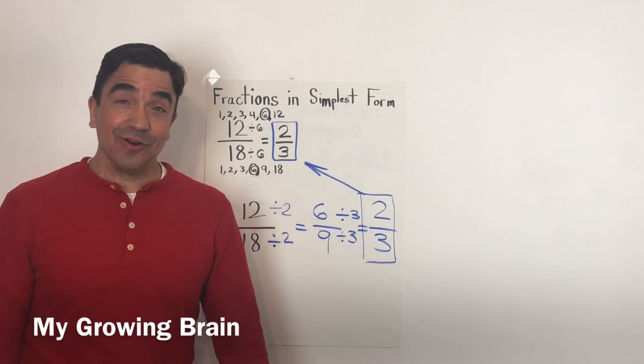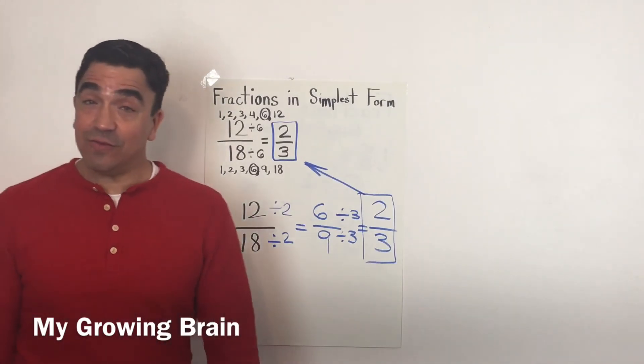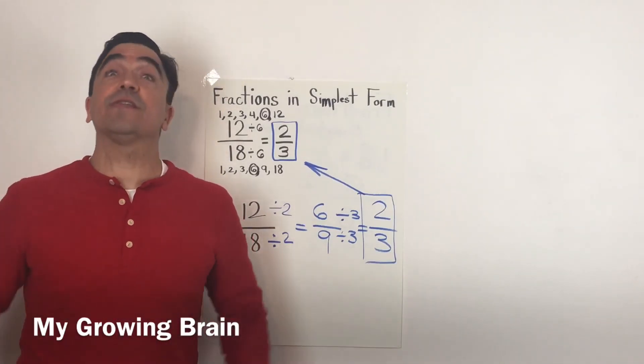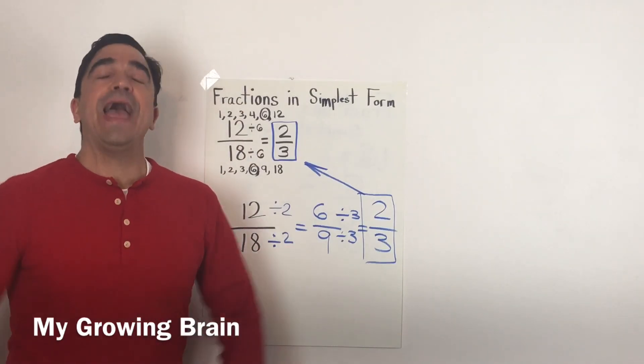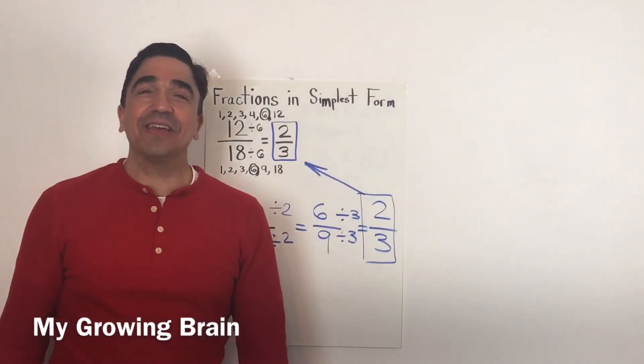And look what happened. We got the same answer. So 12/18, once again, in simplest form, is 2/3. And that concludes our lesson.